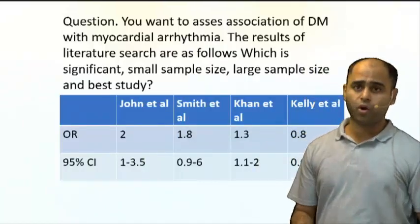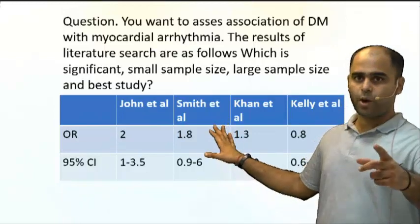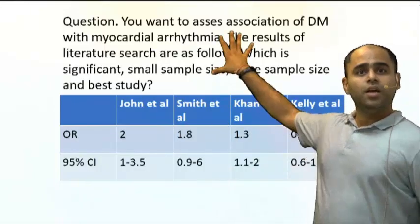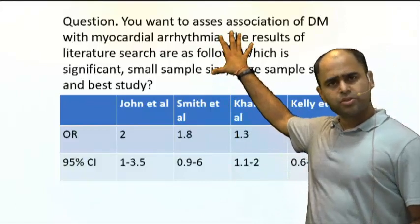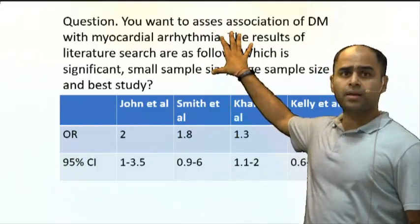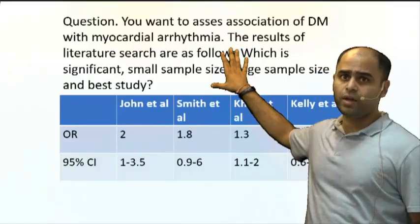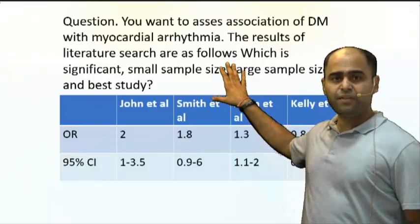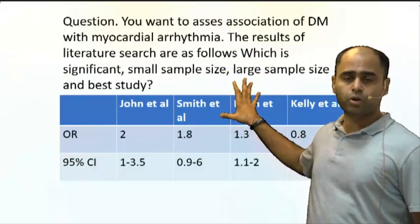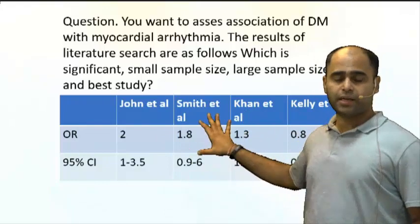I hope after viewing this EQ you have confidence in analyzing these questions. This is a favorite topic for biostatistics. The question: you want to assess the association of diabetes mellitus with MI. The results of the literature search are given, and you must identify which is significant, which has a small sample size, large sample size, and which is the best study.